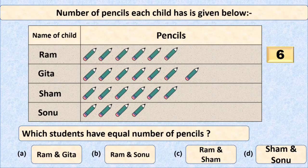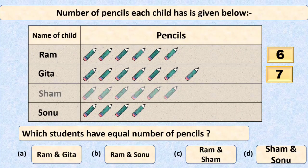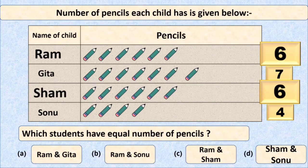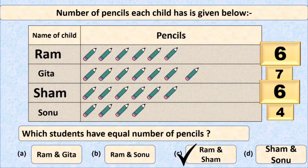Let's count the pencils each one of them has. Ram has six pencils, Geeta has seven pencils, Shyam has six pencils, and Sonu has four pencils. So Ram and Shyam both have the same number of pencils — both are having six pencils. Option C, Ram and Shyam, is the correct option and we will put a tick mark at option C.